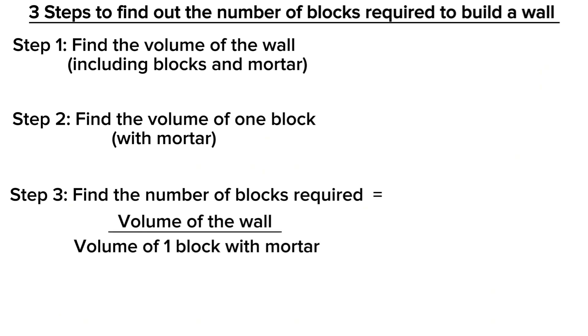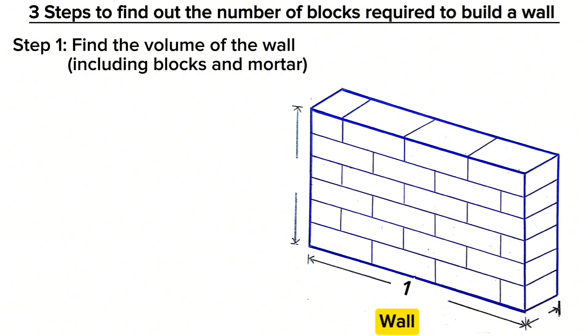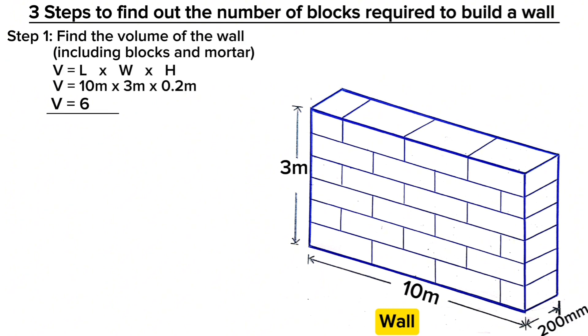Step one: considering a wall of 10 meters along the length, 3 meters along the height, and 200 millimeters wall thickness, the volume of this wall is V = L × W × H = 10m × 3m × 0.2m = 6 m³ or six cubic meters.